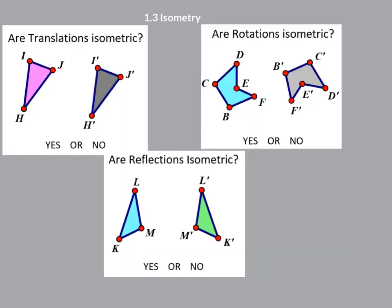So let's look at some transformations and see if they're isometric. Is a translation isometric? In other words, is this shape identical to this shape? And boy, is it ever. Yes, of course it is.